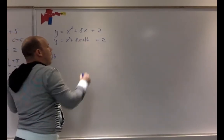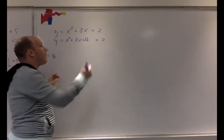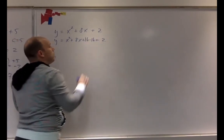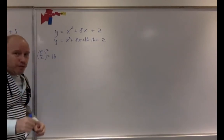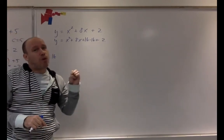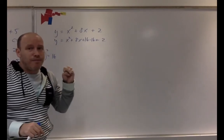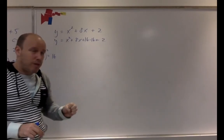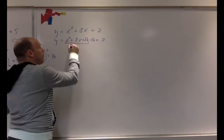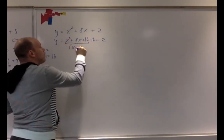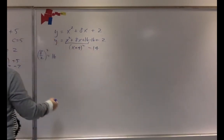Step 2: take the 8, divide it by 2, and square it. 8 divided by 2 is 4, squared is 16. I need a 16 here, but to maintain balance, if I add a 16, I must subtract the 16. Step 3: for those who have been practicing factoring quadratics, you recognize this as a perfect square.